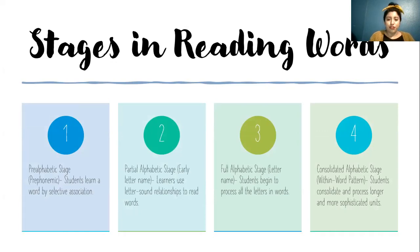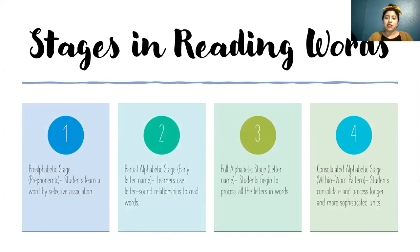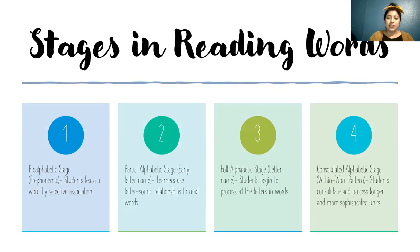They also use one or two letters. The third stage is the full alphabetic stage. Students begin to process all of the letters in words, so they can know that both 'cat' and 'hat' contain '-at' at the end. Then we have the fourth stage, the consolidated alphabetic stage with word patterns, where students consolidate and process longer and more sophisticated units, such as the word 'hand,' separating it into units like H and then END together.